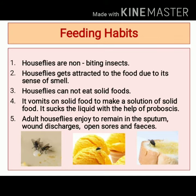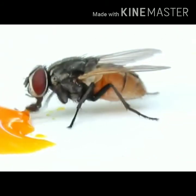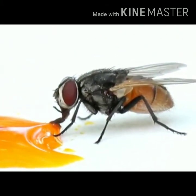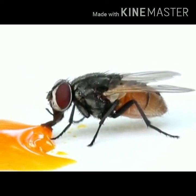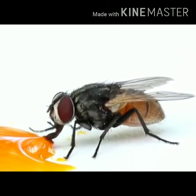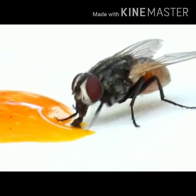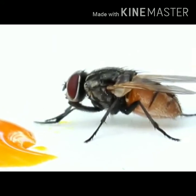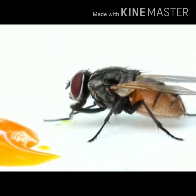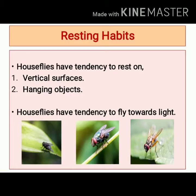Adult houseflies enjoy remaining in sputum, wound discharges, open sores, and feces. Houseflies also have a tendency to rest on vertical surfaces and hanging objects, as well as a tendency to fly towards light.